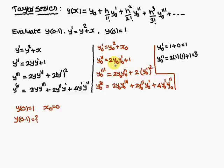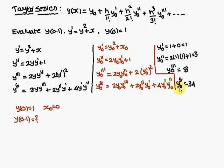For y₀'': 2·y₀·y₀' + 1 = 2·1·1 + 1 = 3. Similarly, substituting all values into the third and fourth differentiation expressions, we get y₀''' = 8 and y₀'''' = 34.